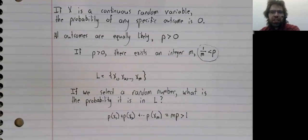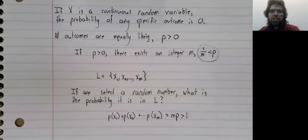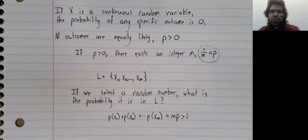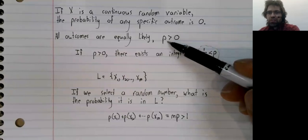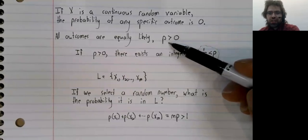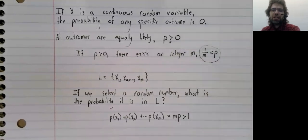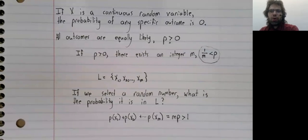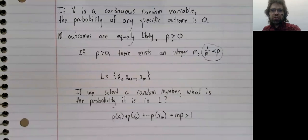And this inequality gives us that. But the probability that we select a number in L can't be greater than one, so something went wrong. And what went wrong was this assumption that the probability is greater than zero. Actually, all of the probabilities are equal to zero.